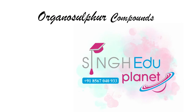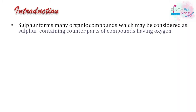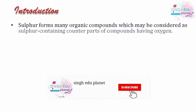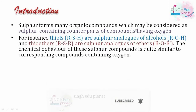Hello everyone, welcome back to my channel. In this video we are starting with the new chapter of organic chemistry final year, that is organosulfur compounds. Sulfur compounds are sulfur-containing counterparts of compounds having oxygen. Where oxygen is present in organic compounds, we replace it with sulfur. For example, alcohols (R-OH) become thiols (R-SH), and ethers (R-O-R) become thioethers. The chemical behavior of sulfur compounds is similar to oxygen-containing compounds.